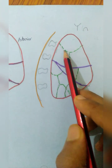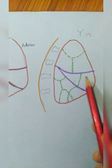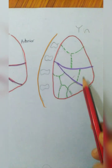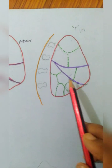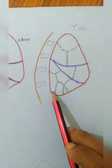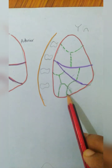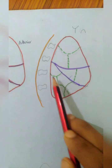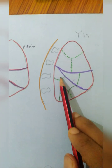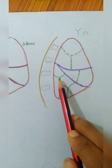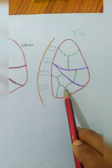Draw one Y in the upper lobe. In the middle lobe, just divide it into two portions. And then the lower lobe — here two mountains and here one Y. By this we can divide the lower lobe into different segments.